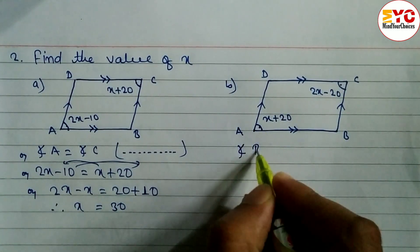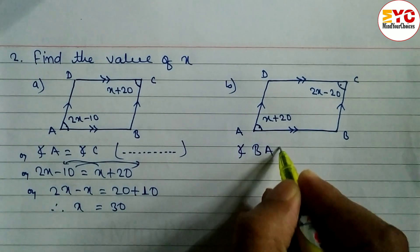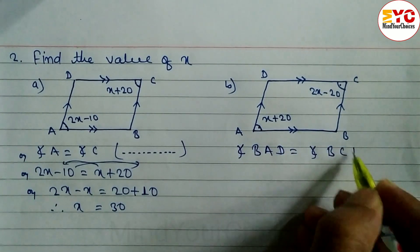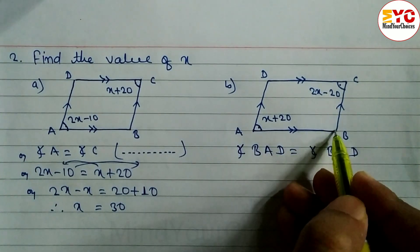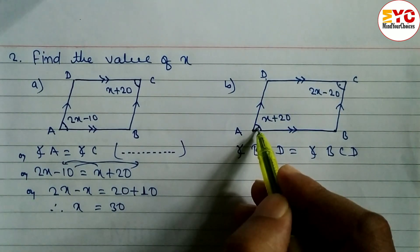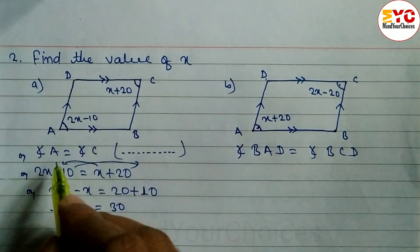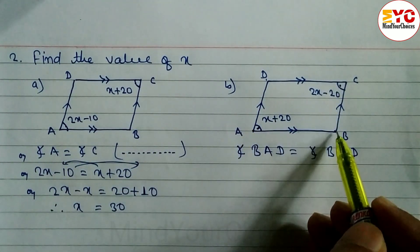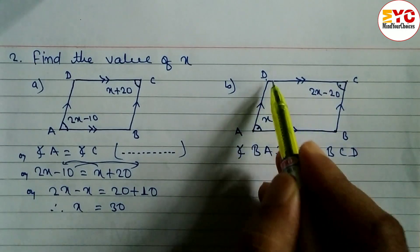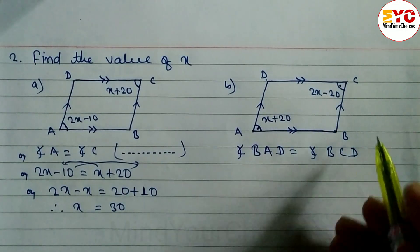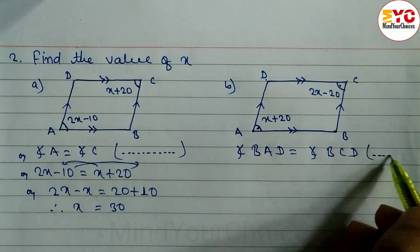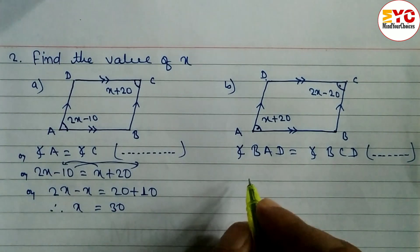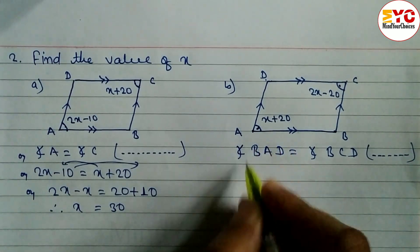Angles A and angle C are both equal. You can write angle BAD is equal to angle BCD. BAD means angle A directly. You can write BCD for angle C. These are opposite angles of a parallelogram and opposite angles of a parallelogram are equal.